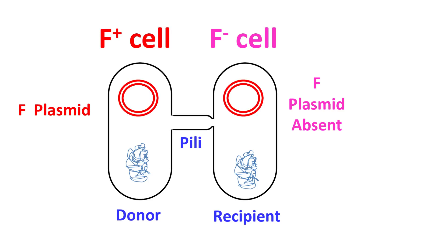Once the process of conjugation is over, the recipient cell will also have a copy of F-plasmid. Hence, after conjugation, the recipient will become F-plus.